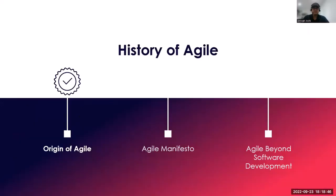I hope this history of agile was interesting to you. Next we will learn about the Agile Manifesto 2001 — how those 17 people came together and what those Agile Manifesto values were. Stay tuned with us to learn more. Thanks a lot.